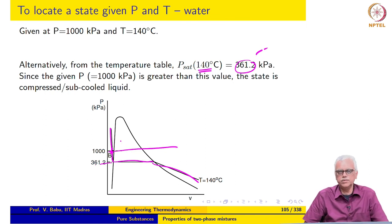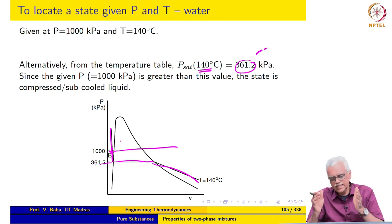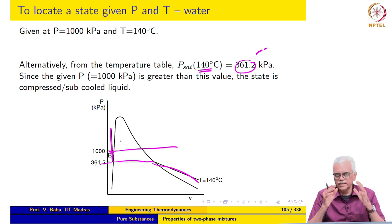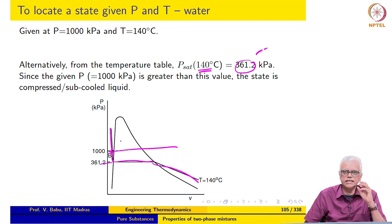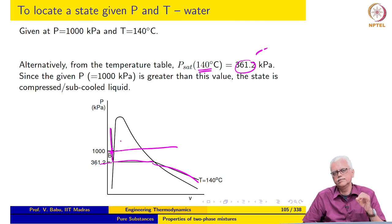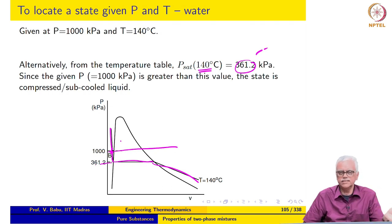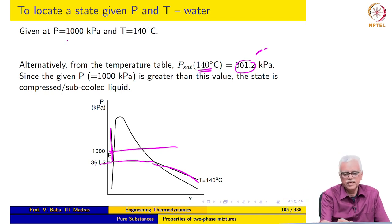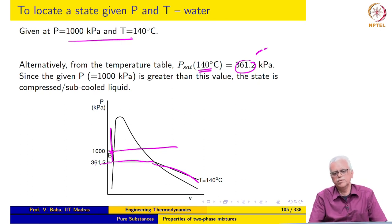This is how we use the steam tables to locate the state — whether it is in the superheated, compressed liquid, or mixed region must be determined using the steam table. Once we have determined the region, property evaluation comes next. The key insight is: if you are given P and T, you may presume they are independent, which means the given state will lie in either the compressed or subcooled liquid region or in the superheated region.